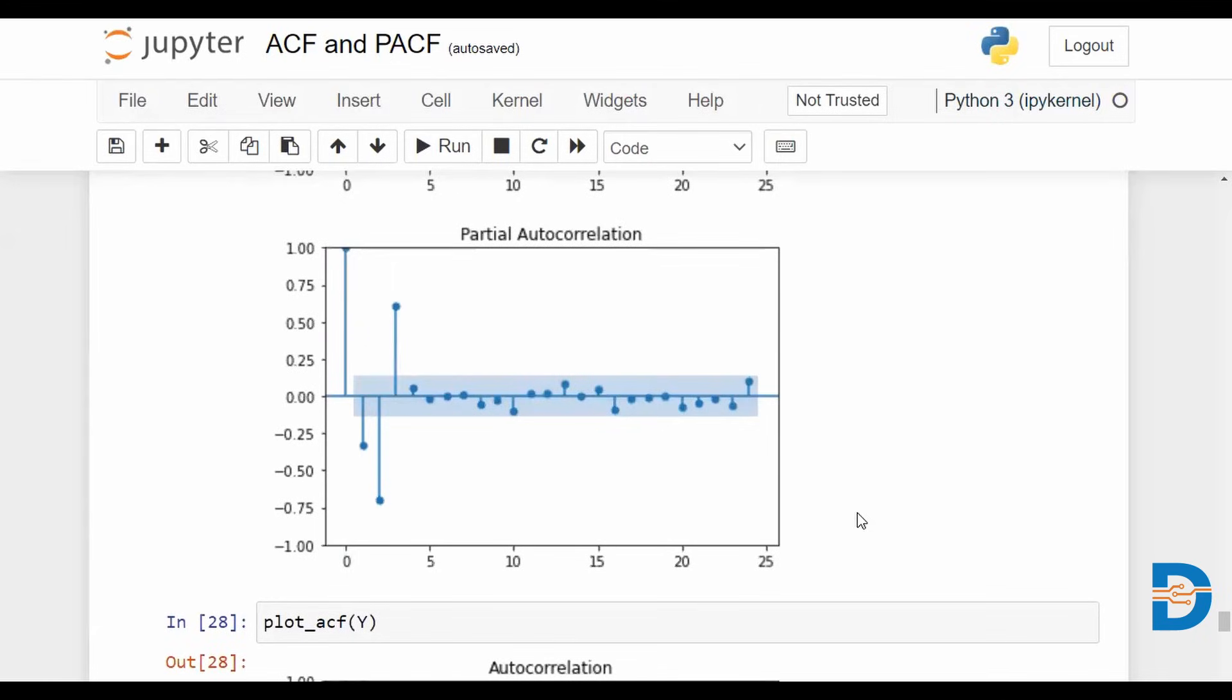More often than not, the partial autocorrelation is giving us the order of the autoregressive model, and the autocorrelation function plot gives us the order of our moving average model.